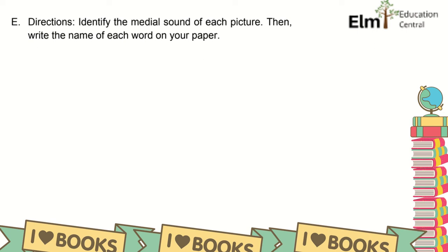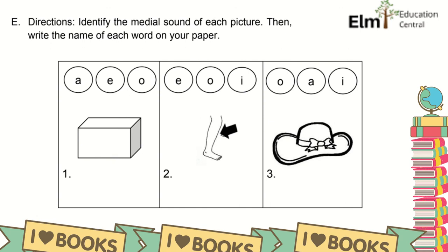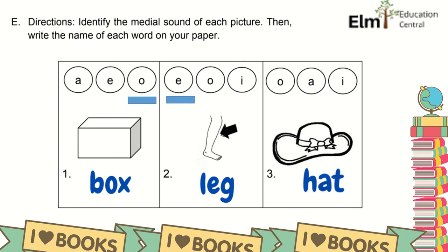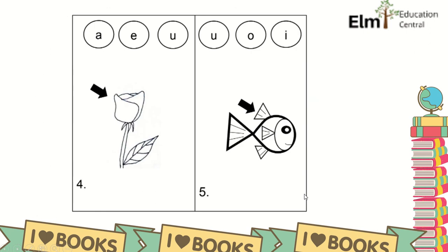Another activity: identify the middle vowel sound of each picture, then write the name of each word on your paper. Number 1: box — the middle vowel sound is O. Number 2: leg — the middle vowel sound is E. Number 3: hot — the middle vowel sound is O. Number 4: bud — the middle vowel sound is U. And number 5: fin — the middle vowel sound is I.